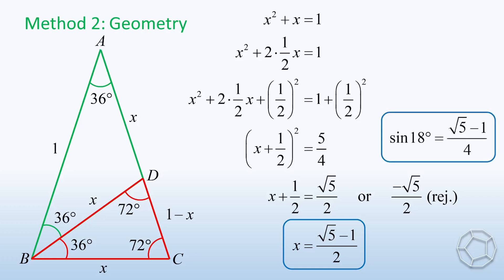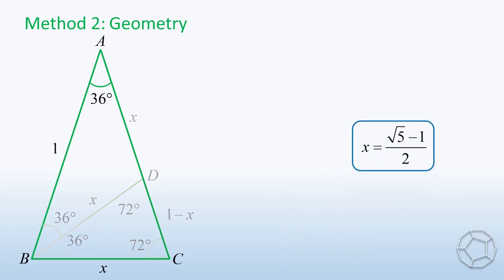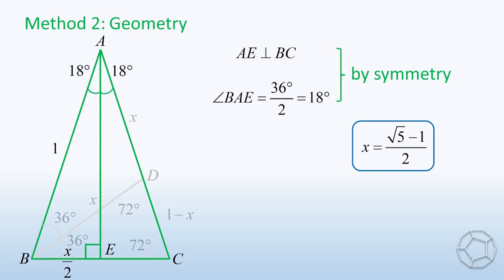It looks like the value of sine 18 degrees in method 1, but we have to construct 18 degrees in this triangle. Let E be the midpoint of BC and construct AE, so BE is equal to X over 2. By symmetry, AE is perpendicular to BC and each angle at AE is equal to 18 degrees. Let's just look at half of the triangle. We have sine 18 degrees is equal to BE over BA, which is equal to X over 2. Put the value of X inside. Again, we get the value of sine 18 degrees directly.